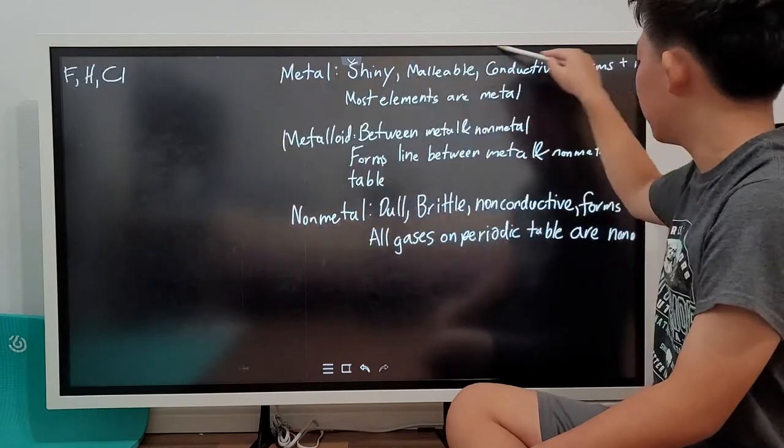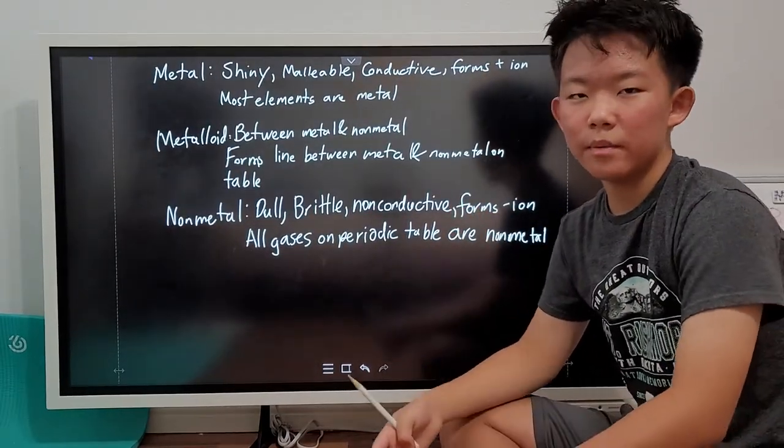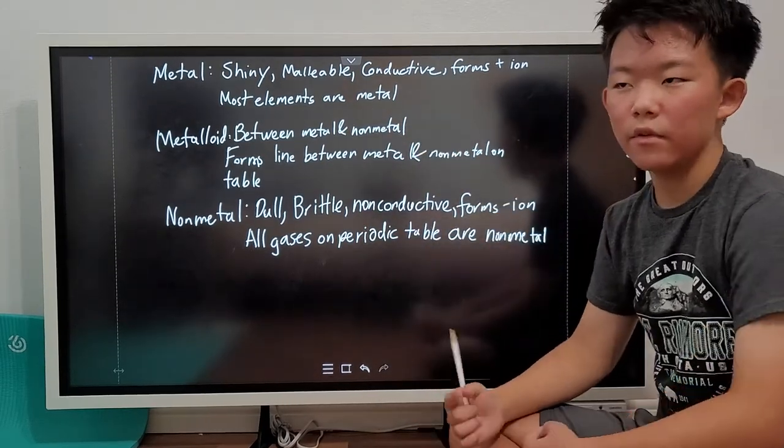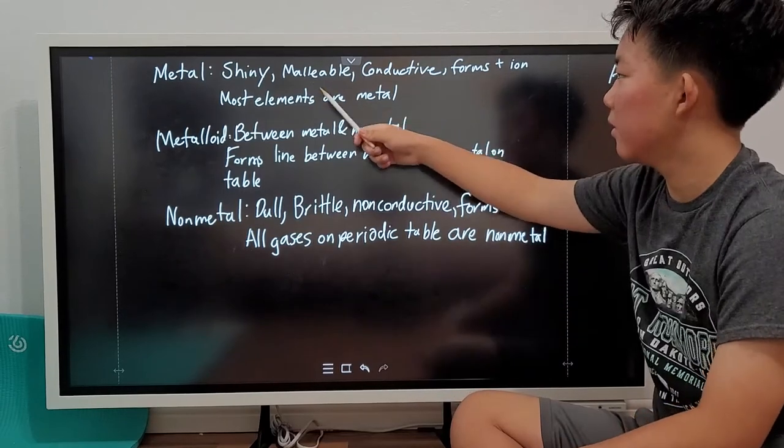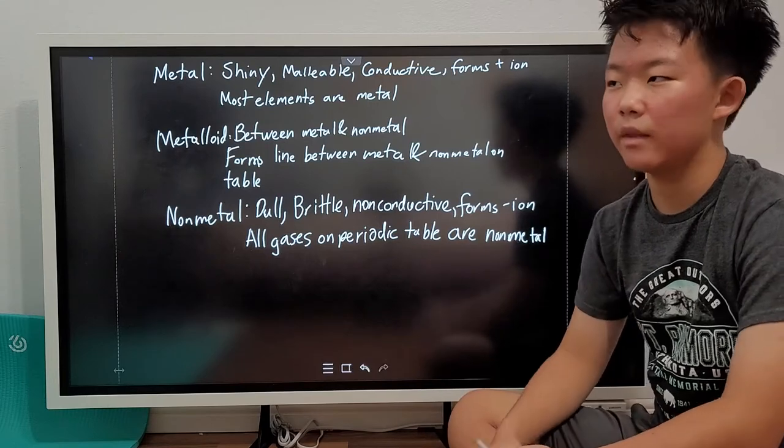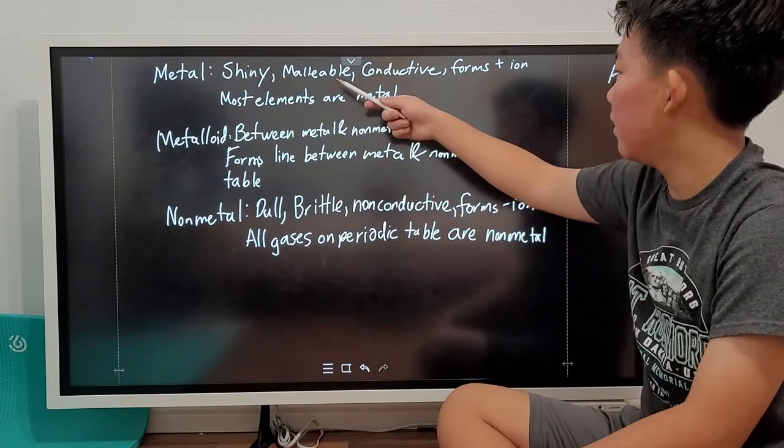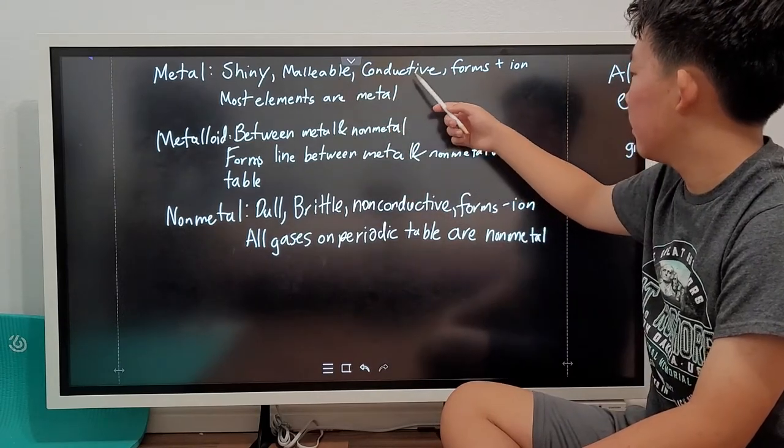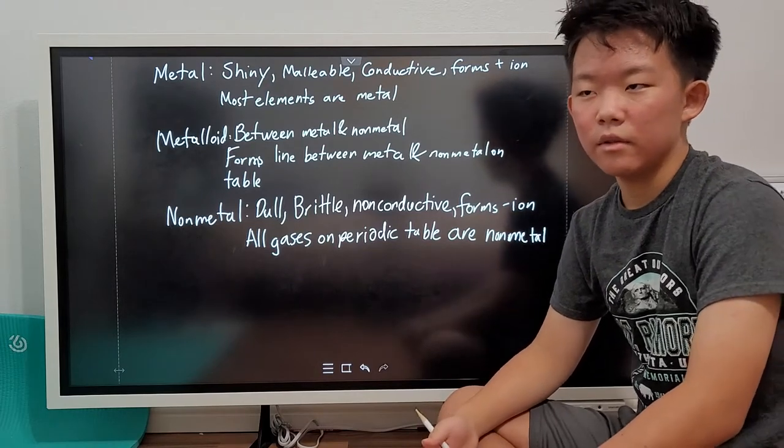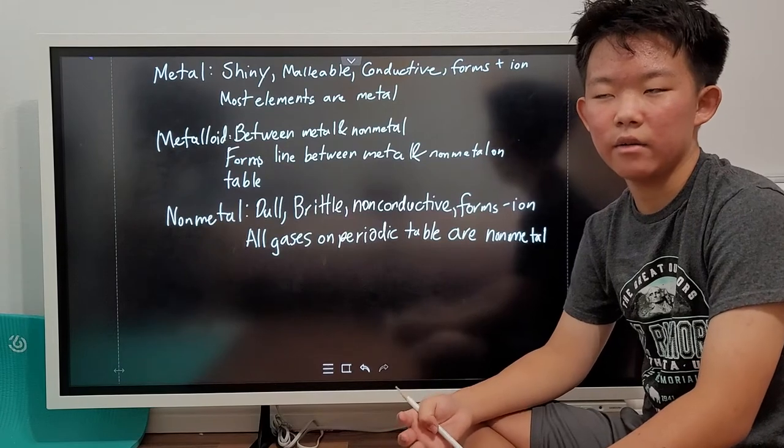There are three major types of elements in the periodic table. There are subcategories of these, but in general, we have three. The first one is the metal. Of course, I'm pretty sure you're familiar with what a metal looks like, right? It's shiny, hard, that kind of stuff. But the chemistry definition is that it's also malleable, conductive, and forms positive ions. Also, most elements, like I've said, are actually metals.